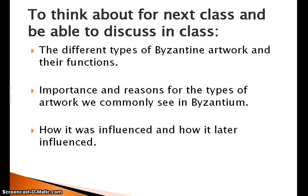That's a good introduction. We're going to focus on architecture in class. Some things to think about for next class: the different types of Byzantine artwork and their functions, the importance and reasons for the types of artwork we commonly see in Byzantium — like that image of Justinian with Michael looking over him, why make it, what is the purpose? And how Byzantine art was influenced and how it later influenced other traditions, which we're going to be focusing on in class. Thanks for listening, see you next time.